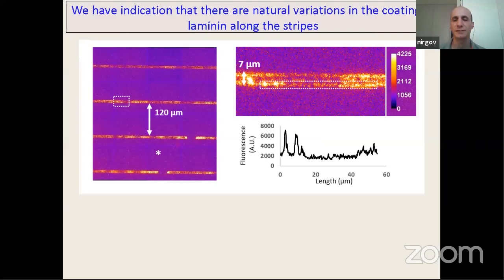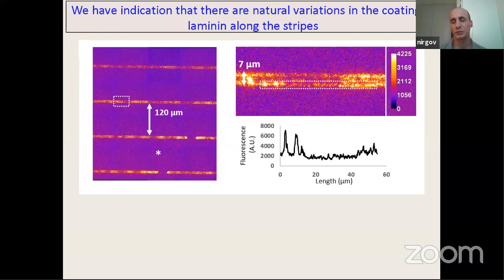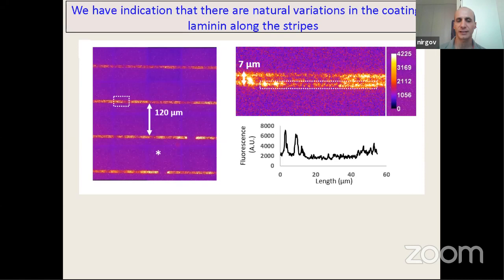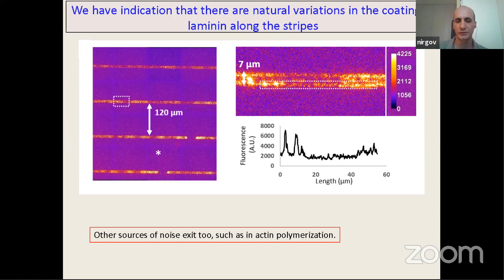Looking more closely at the adhesive stripes painted on the cover slide, fluorescent tagging of laminin shows large spatial variations in fluorescence that could very well trigger such sudden changes in cell-substrate adhesion stickiness. Other sources of noise also surely exist, such as noise in actin polymerization.